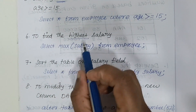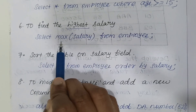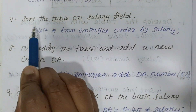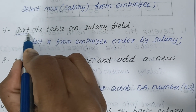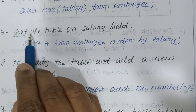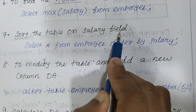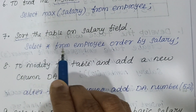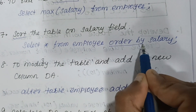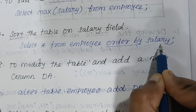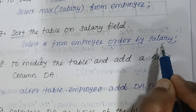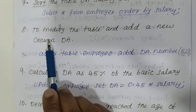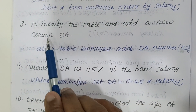To find the highest salary, 'highest' means maximum, so write SELECT MAX(salary) FROM employee. The next question is about sorting: sort the table on the salary field. 'Sort' means ordering in ascending or descending order, so write SELECT * FROM employee ORDER BY salary. If they ask to sort on name, write ORDER BY name.